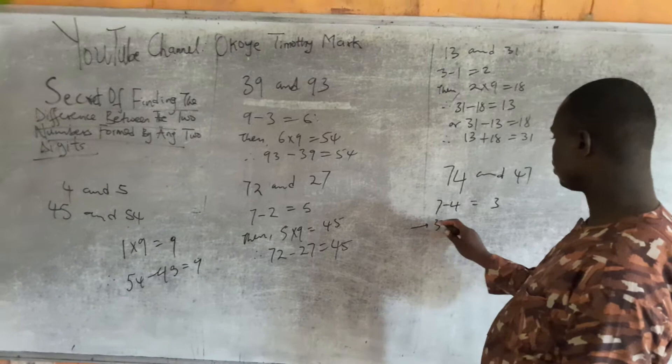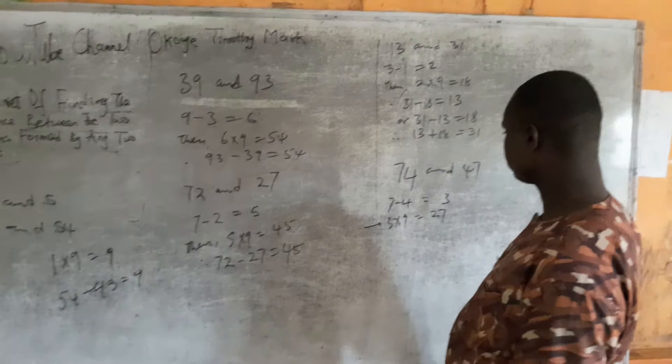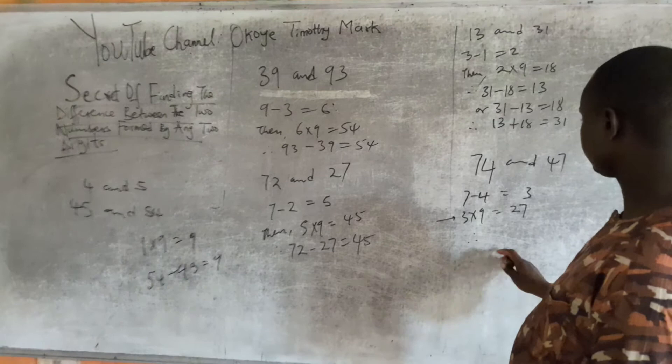Then 3 times 9 is 27. Therefore, 74 minus 47 gives you 27.